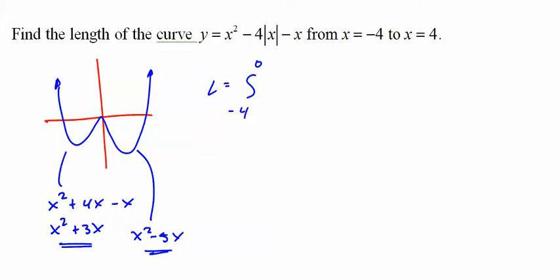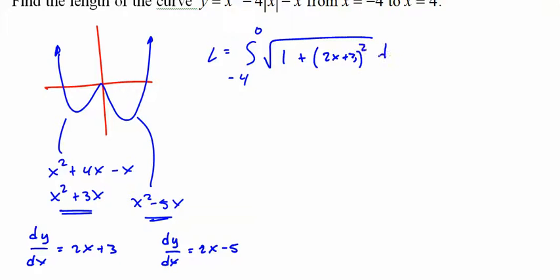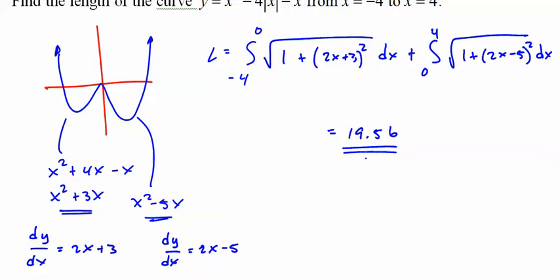So let's do the derivative twice. 1 plus 2x plus 3 squared dx plus 1 plus 2x minus 5 squared dx. All said and done, 19.56. Tricky stuff.